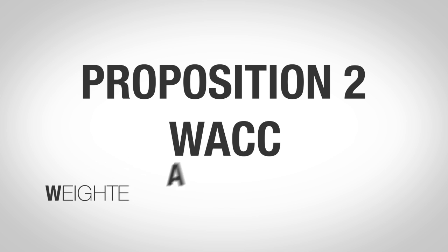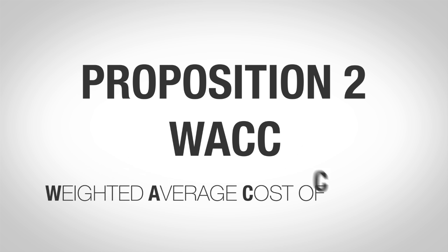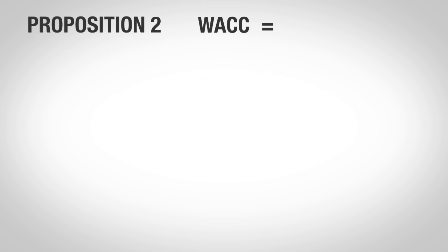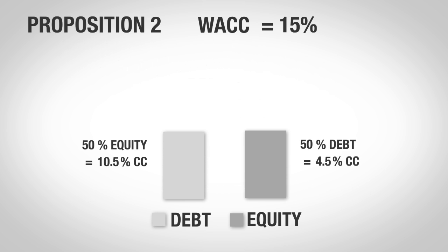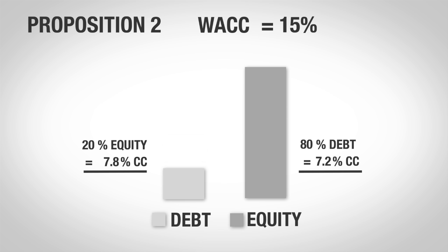Proposition 2 looks at the WACC — Weighted Average Cost of Capital. It states that the WACC is unaffected by the capital structure of a company, because any change in the debt-to-equity ratio is exactly offset by the cost of equity. For example, if we increase the amount of debt-to-equity, we can see that the costs still amount to the same WACC.